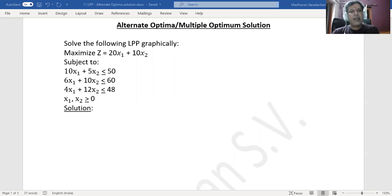The example goes like this: solve the following linear programming problem graphically. Maximize Z which is equal to 20x₁ plus 10x₂ subject to 10x₁ plus 5x₂ less than or equal to 50, 6x₁ plus 10x₂ less than or equal to 60, 4x₁ plus 12x₂ less than or equal to 48, and then x₁, x₂ are non-negativity restrictions.